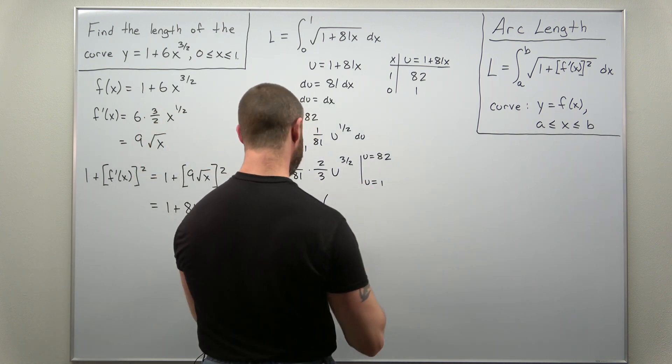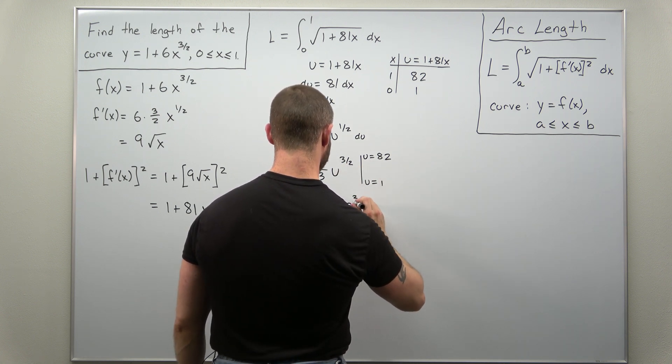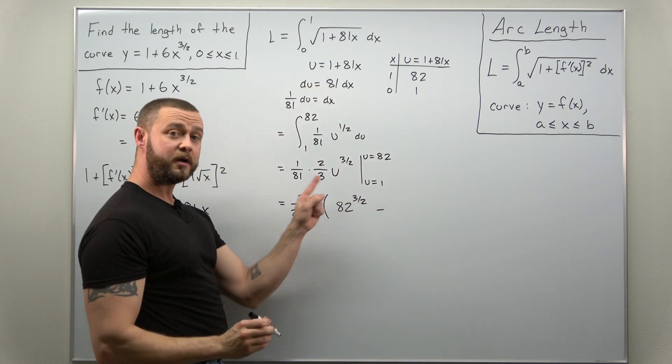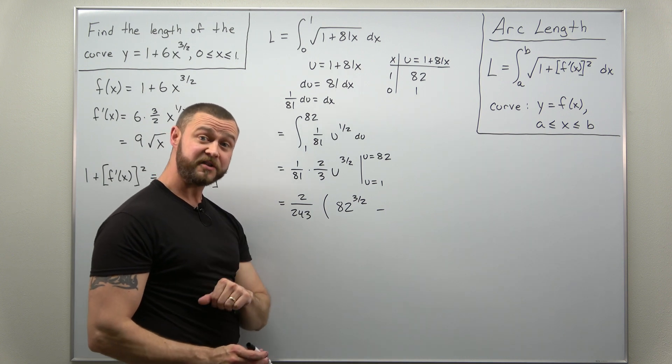So it looks like if you factor out that fraction and evaluate, you'll get 82 to the three halves power. And then plug in 1, u to the three halves power, where u is 1, that just becomes 1.